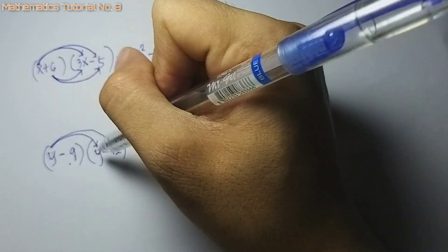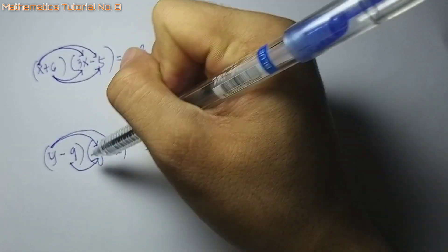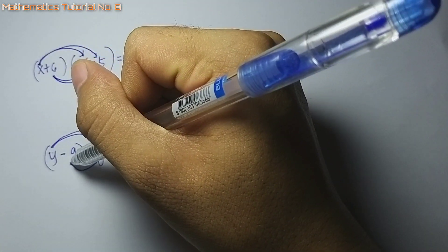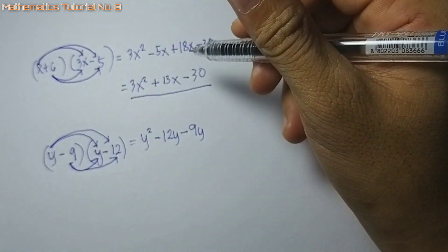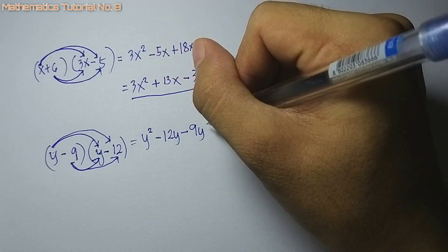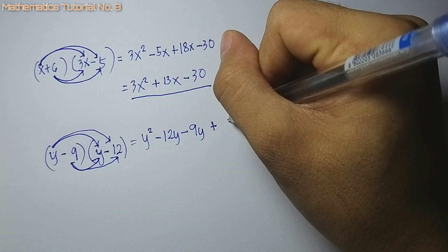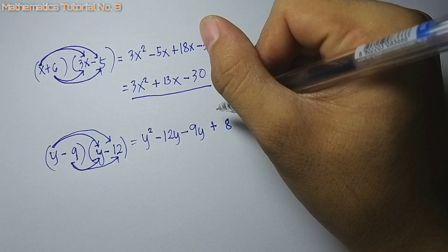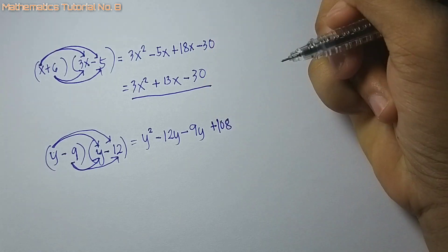Next, i-distribute na rin si negative 9 sa tanan terms sa picas. Negative 9 times y, that is negative 9y. Dayon i-distribute sa last: negative 9 times negative 12, that is positive — 9 times 12, which is 108.